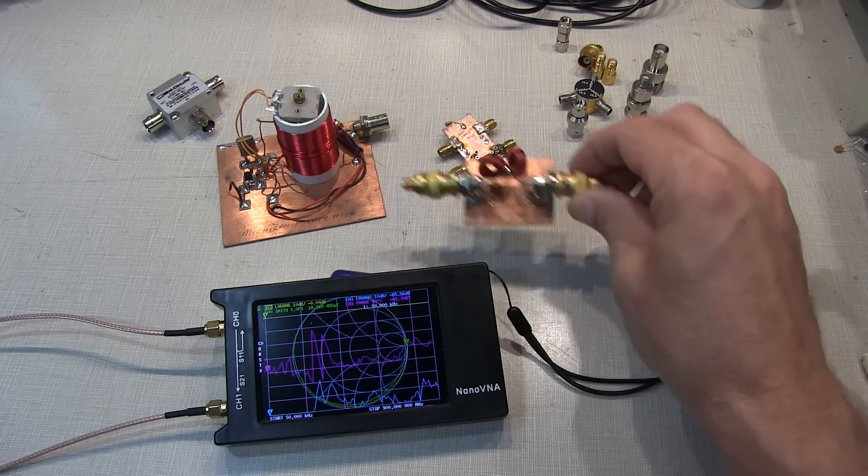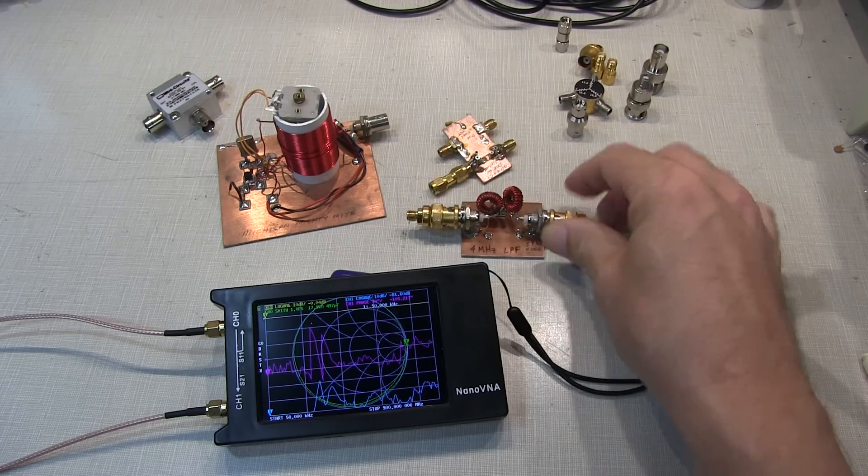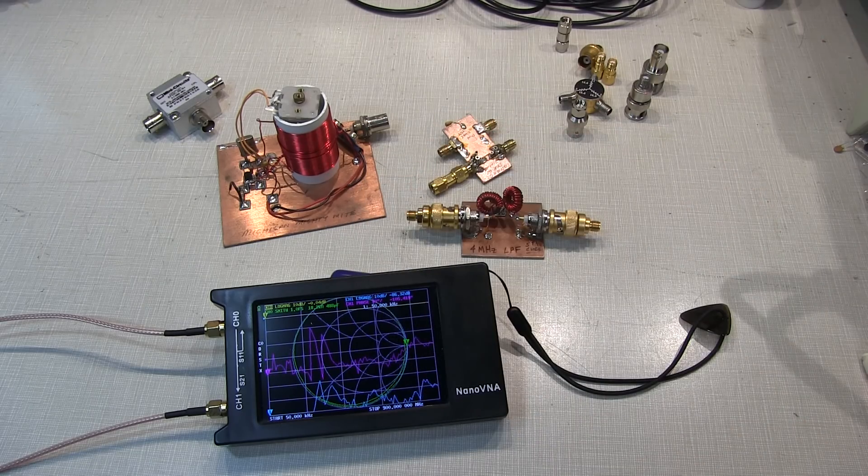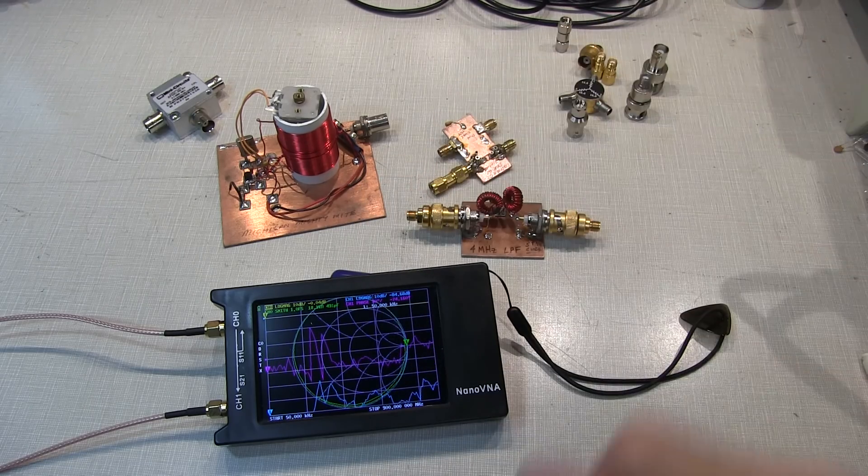The filter we'll use is this 4 MHz low-pass filter that I coupled up with the Michigan Mighty Might in video number 228. I'll link that video down below.